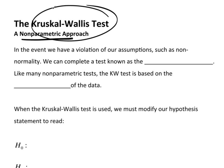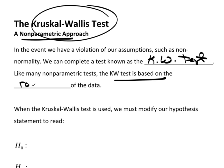In the event we have a violation of our assumptions, such as nonnormality — but not only nonnormality, there are actually a couple of places this could happen — we can complete this test known as the Kruskal-Wallis test, which I'm going to abbreviate as the KW test. And like many nonparametric tests, the KW test is actually based on the ranks of the data.